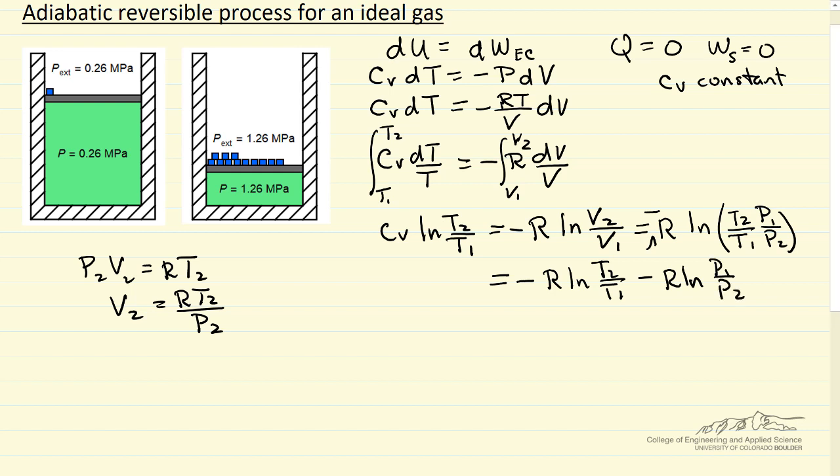So I'm gonna bring this term to the left side and factor out the log term. So the left side becomes cv plus r, and then the log of t2 over t1. And on the right side, I'm gonna rewrite this term by reversing p1 and p2 and changing the minus sign to a plus sign. So again, just a property of logs. The right side becomes plus sign now, log of p2 over p1.